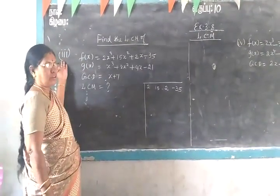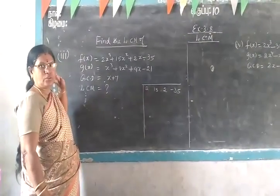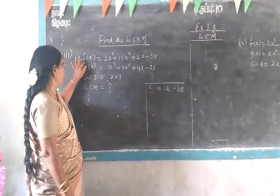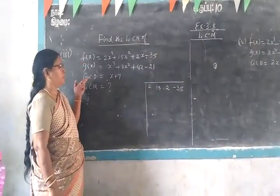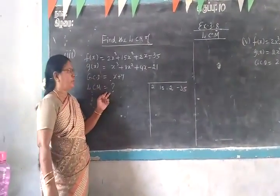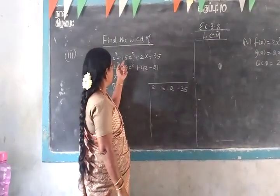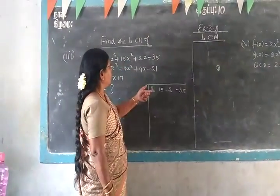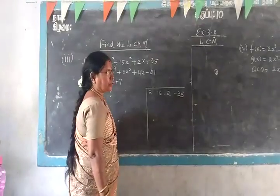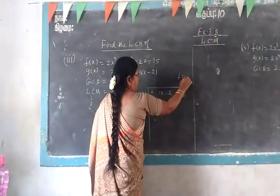This is the third question. Previously we have seen two questions. Now the third question is about the appropriate temperature — the opposite temperature. GCD and LCM is the bottom line. The ratio of the temperature is 2, 15, 2, minus 15, 5. The appropriate temperature is the number of the temperature.